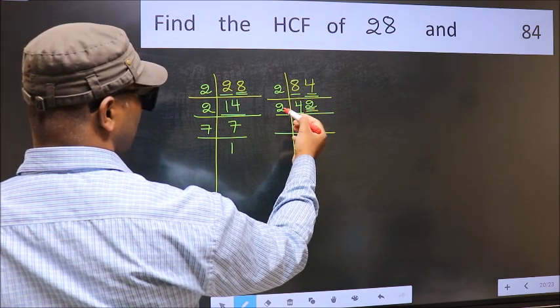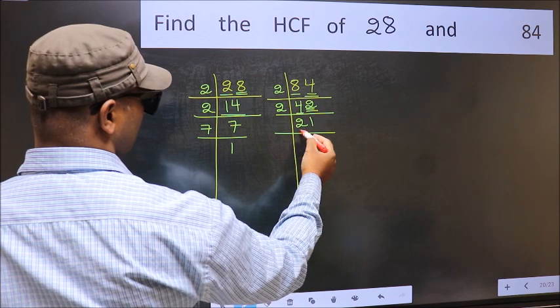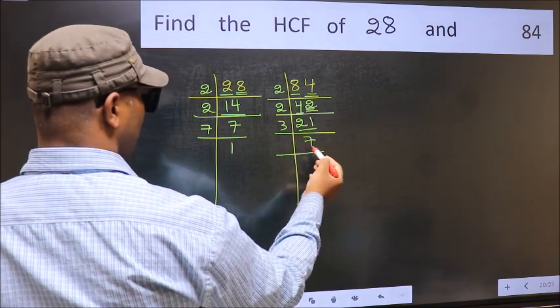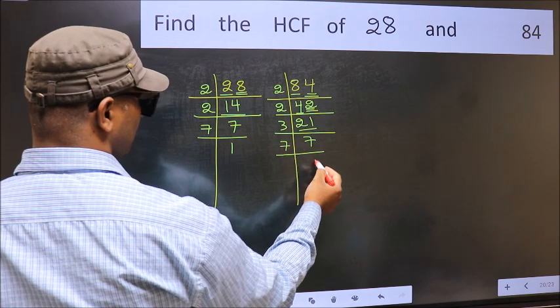The other number 2, when do we get 2 in 2 table? 2 times 1 is 2. Now 21 is 3 times 7 is 21. 7 is a prime number, so 7 times 1 is 7.